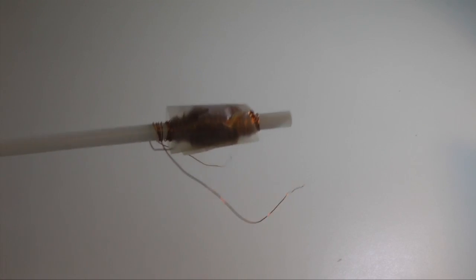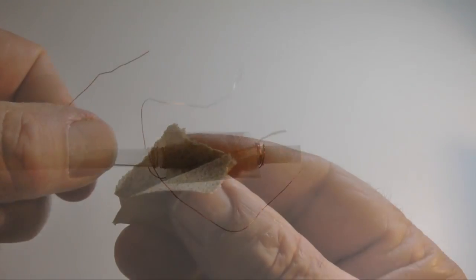Magnet wire is coated with a clear insulator. I'm using sandpaper to remove this insulation, exposing the bare copper wire.